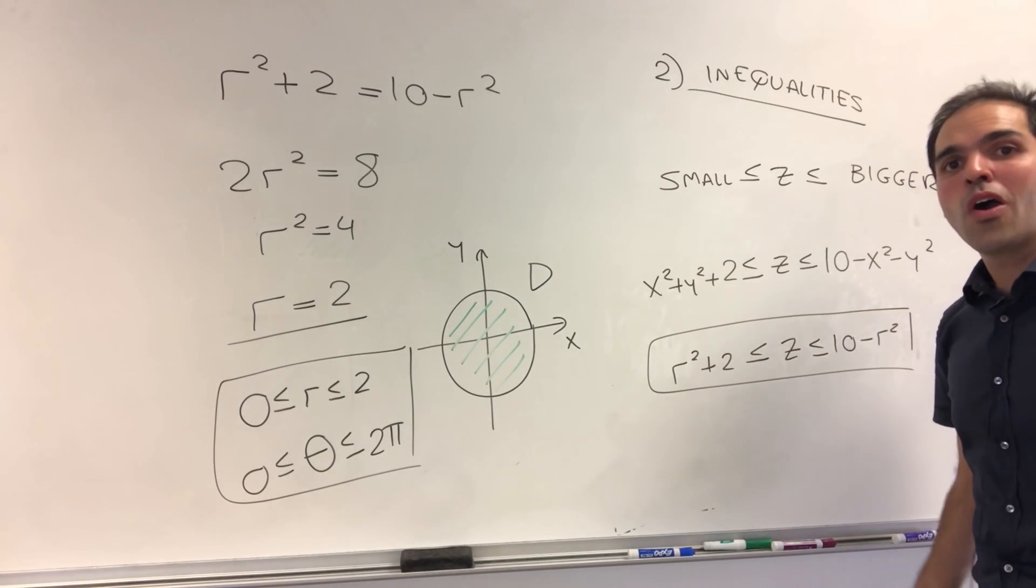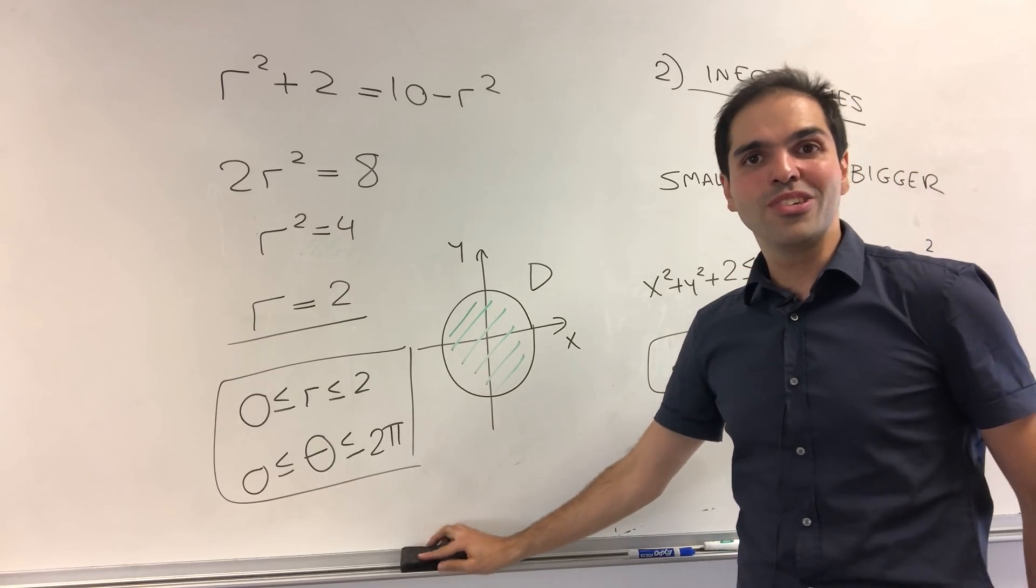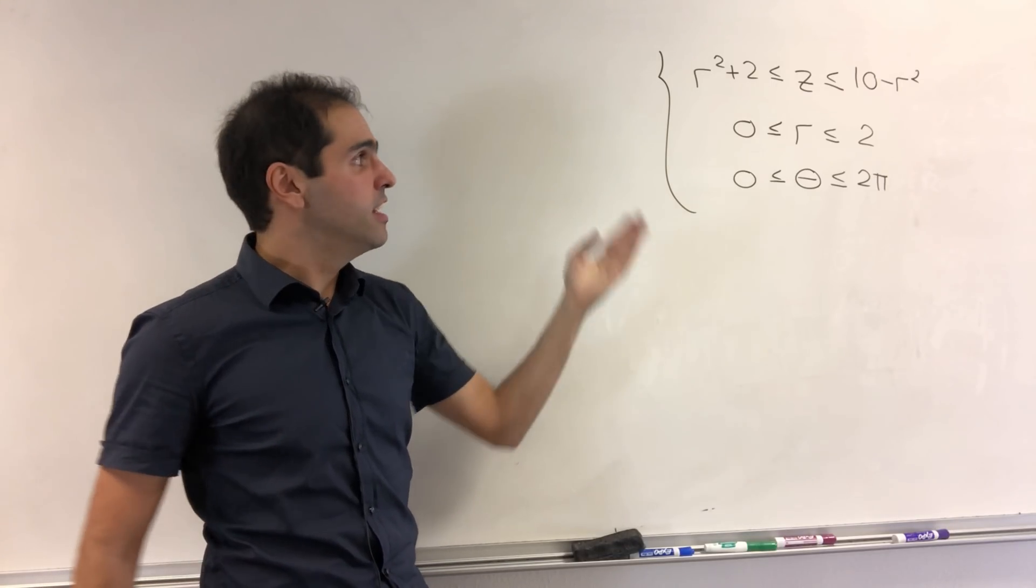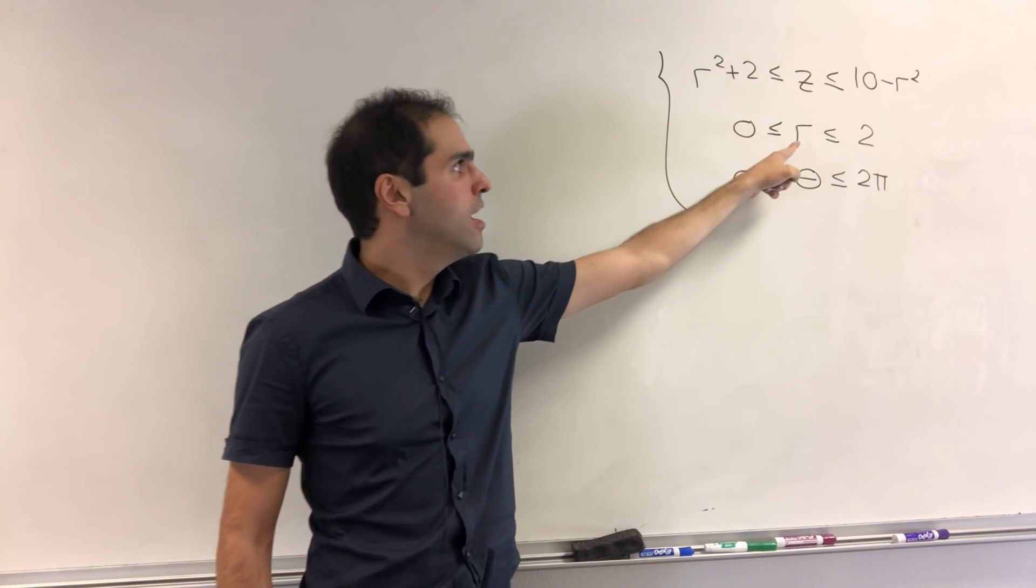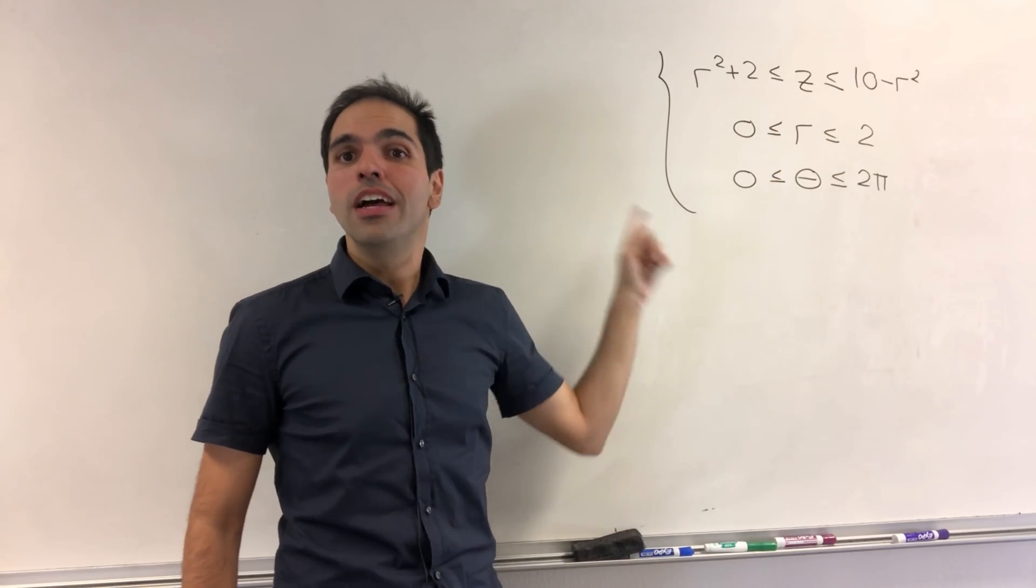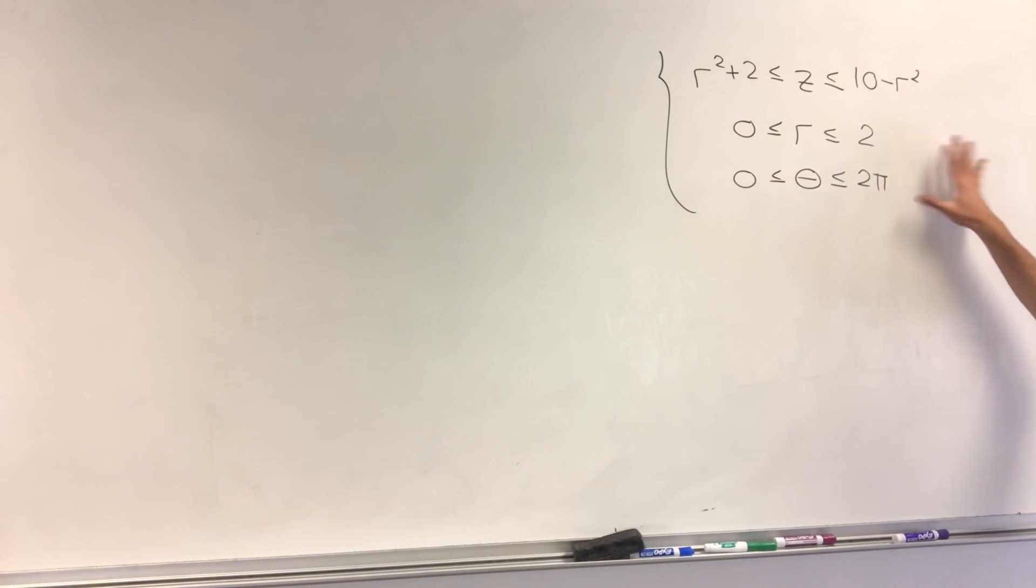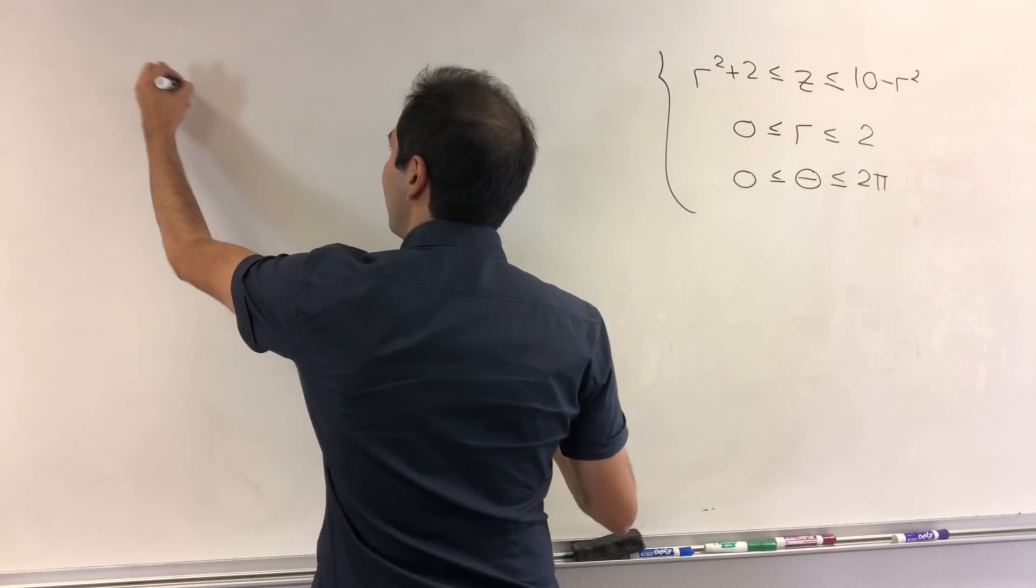And those are our other inequalities. And now, we're ready to just put them together. So our inequalities in the end is z is between r squared plus 2 and 10 minus r squared, r between 0 and 2, and then theta between 0 and 2 pi. And definitely rewrite this. It will help us with our integration. Because now, we are ready to integrate.